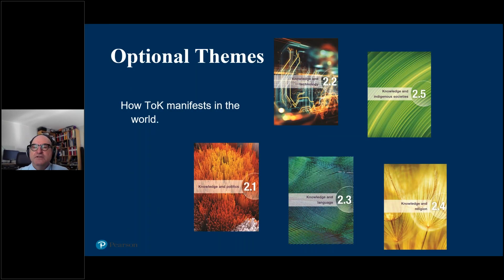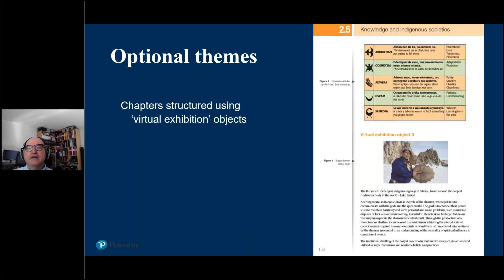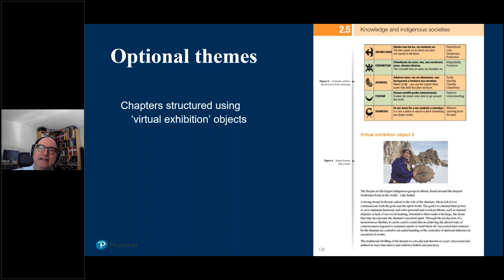The optional themes — you've got to choose two of these. We give them separate chapters in the book, each quite substantial at 30 or 40 pages. Each of the optional themes is treated very carefully. This is one of Julian's chapters on knowledge in indigenous societies. In each of these chapters, we pretend we're doing the exhibition and choose three objects to concentrate on and make links between them — exactly as a student would be expected to do in the exhibition. The chapters are organized using the knowledge framework as well.